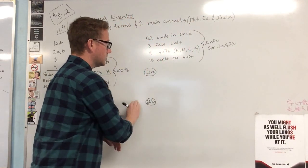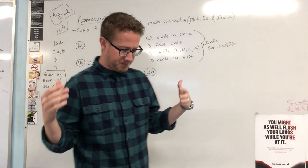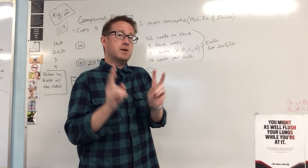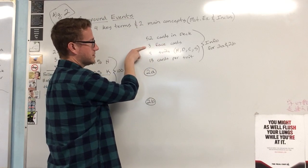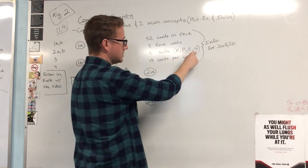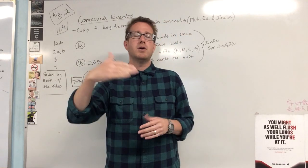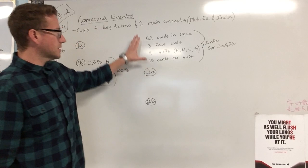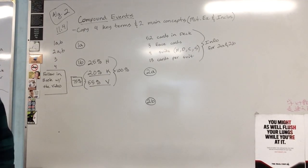Now let's jump into 2a and 2b. A lot of probability problems deal with playing cards, dice, or flipping coins, and you need to know their basics. In a deck of cards there are 52 cards total. There are three face cards per suit, four suits — hearts, diamonds, clubs, and spades — and 13 cards per suit. That means cards numbered 2 through 10 plus Jack, Queen, King, and Ace equals 13 cards per suit.